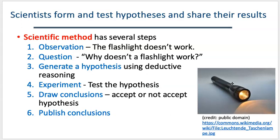So why doesn't the flashlight work? We can test that — maybe it's the batteries, maybe it's the light bulb, maybe it's something with the wiring. After we develop that question, it leads to the third step: generating a hypothesis. A hypothesis proposes a testable explanation to answer the question being asked. So if the question is why doesn't the flashlight work, your hypothesis might be as straightforward as: the flashlight doesn't work because the batteries are dead. A hypothesis is simply that testable explanation that answers the question.